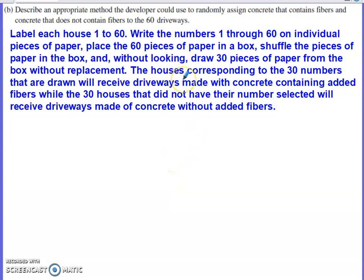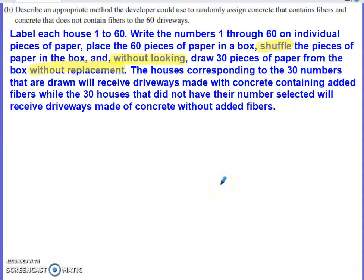For the randomization method, I write the numbers 1 through 60 on pieces of paper and place them in a box. If you don't say you're mixing or shuffling them, that's a flaw. If you don't say you're not looking as you draw, that's also a flaw. You also have to make sure the houses cannot be selected more than once — no replacement. The 30 houses whose numbers are drawn will receive driveways with concrete fibers, and the other 30 will not receive that treatment.